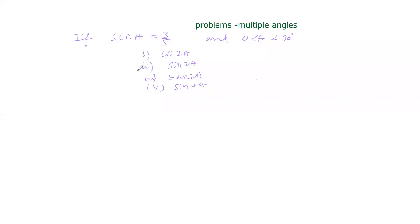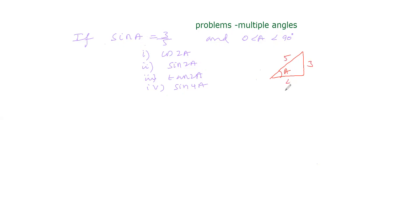You are given the problem: if sin A equals 3/5, find cos 2A, sin 2A, tan 2A, and sin 4A. To find these values, we first form a triangle. Let the angle be A. Since sin A = 3/5, the opposite side is 3, hypotenuse is 5, and adjacent side is 4, from Pythagorean triplets.